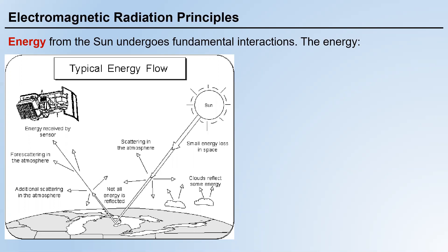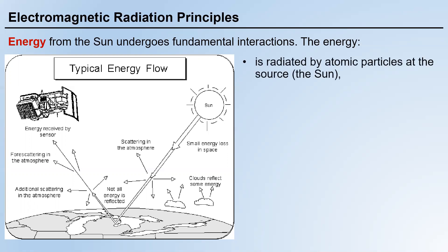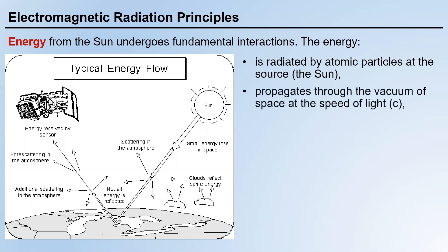Now, let's talk about passive remote sensing where the sun is the energy source. Energy from the sun undergoes fundamental interactions. The energy travels from the sun to the surface of the earth and gets reflected by objects on the ground. The reflected energy is then received by a remote sensor, and we analyze it to get information about the objects on the ground. Sun energy is radiated by atomic particles at the source.